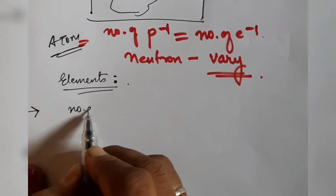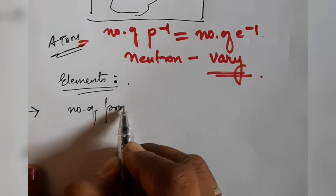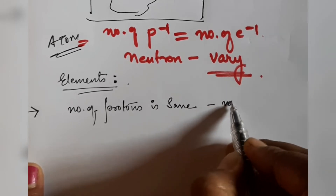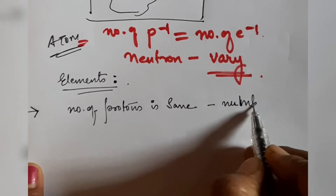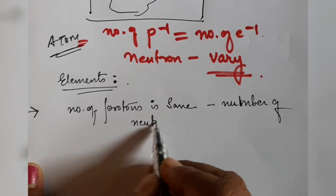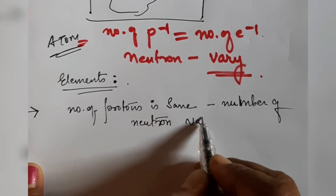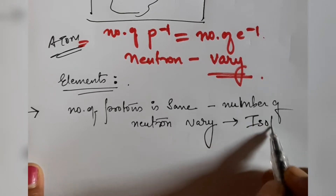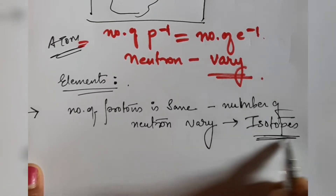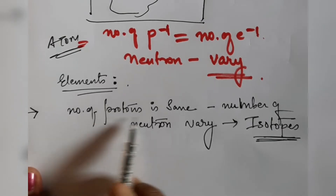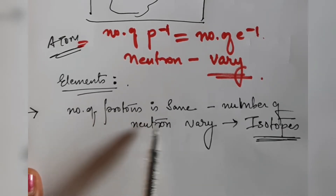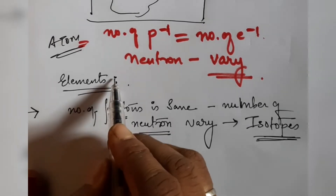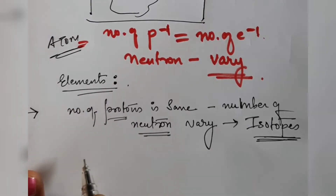In some elements, the number of protons is the same whereas the number of neutrons varies — we say these are isotopes of that element. Isotopes are forms of the same element where the number of protons is the same but the number of neutrons differs.